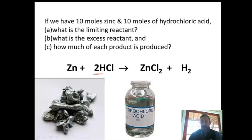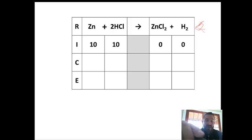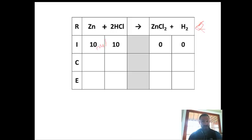We have a 1 to 2 mole ratio of zinc to hydrochloric acid — that's a mole ratio, not a mass ratio. Zinc and hydrochloric acid have different masses, so we can only compare moles. Setting up the RICE table: the reaction is at the top, initial amounts are 10 moles of zinc, 10 moles of hydrochloric acid, and zero for products. To find the limiting reactant, we convert each reactant to moles of hydrogen gas. From zinc with a 1 to 1 ratio, 10 moles of zinc gives 10 moles of hydrogen gas.